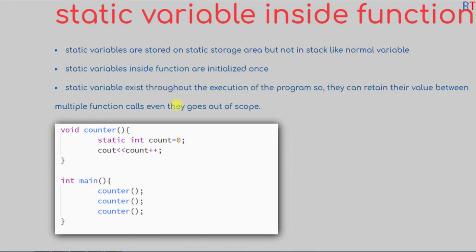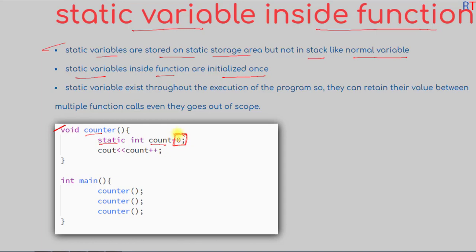Static variables inside a function are stored in the static storage area, not on the stack like normal variables. Static variables inside a function are initialized only once. For example, inside the function counter we have one static variable — int count — initialized with the value 0. We can still modify it or perform arithmetic operations over that variable.